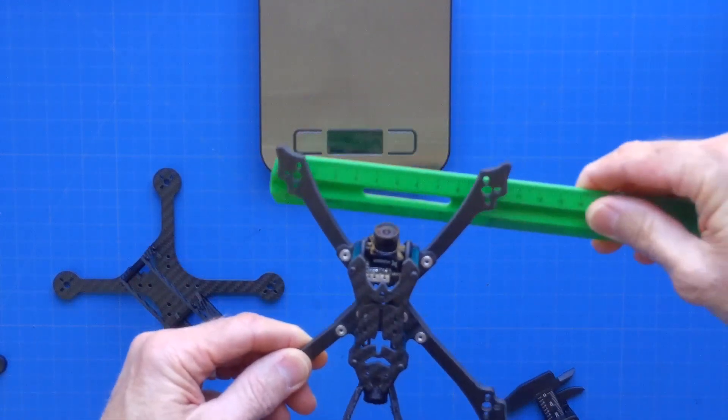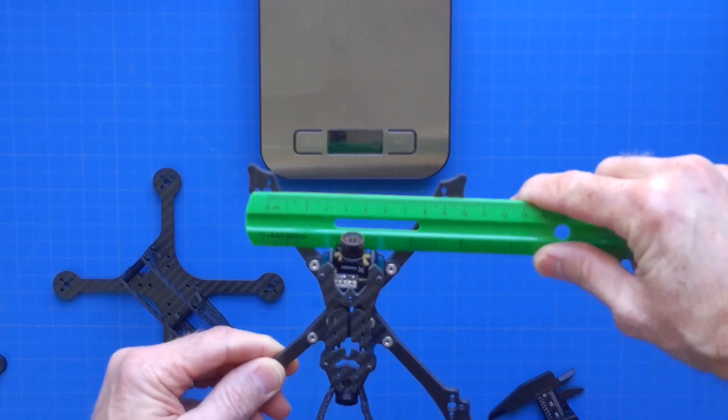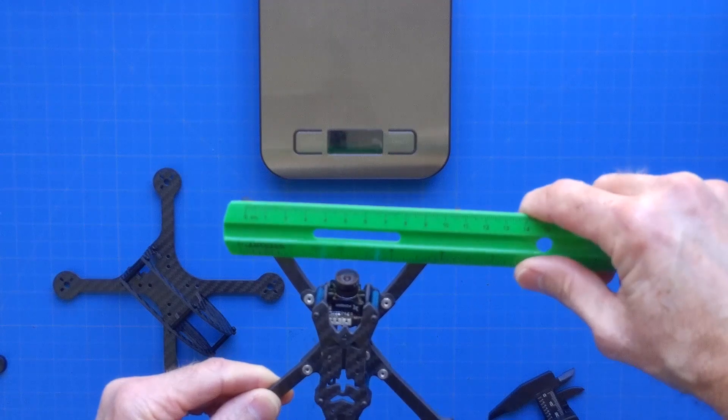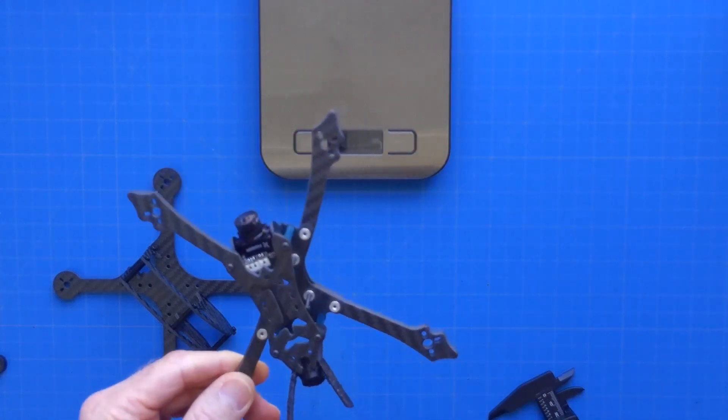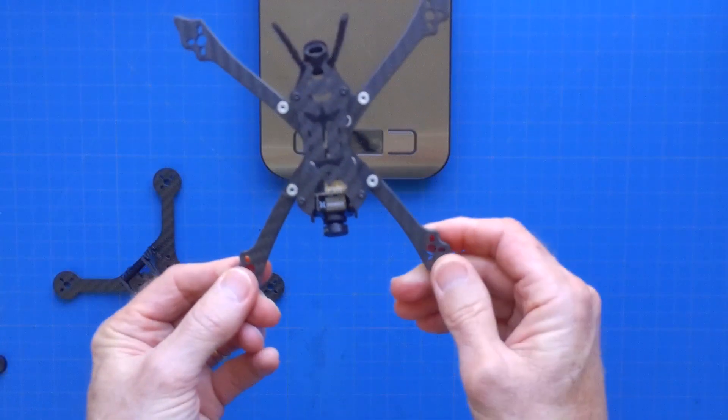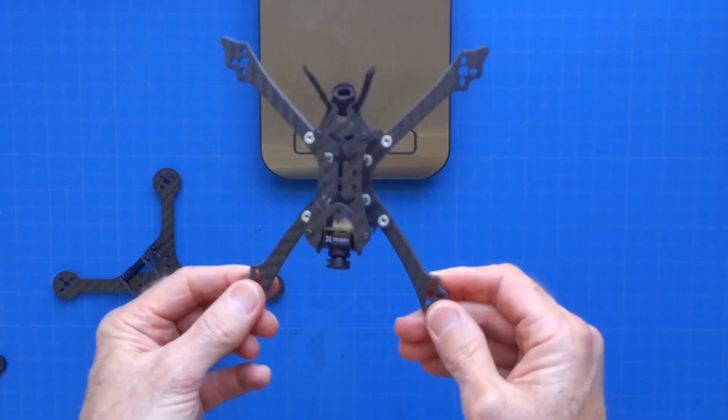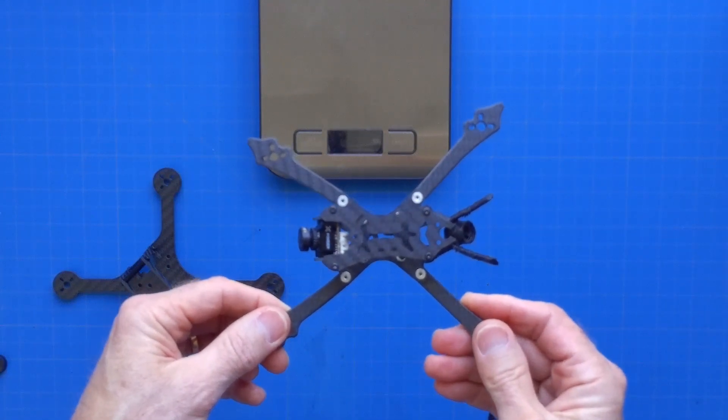These arms are only, well, motor to motor they're 90 millimeters apart. From the tips they're about 107 millimeters apart. So once again you'll have to determine whether or not this is sufficient camera protection for you before you decide whether or not you want to purchase this hybrid frame.